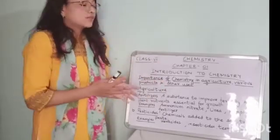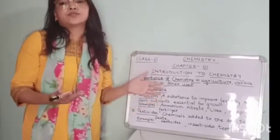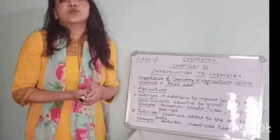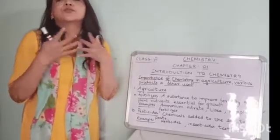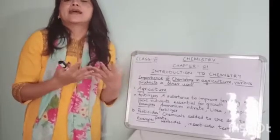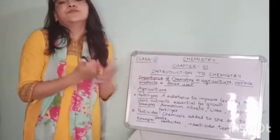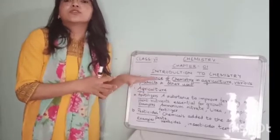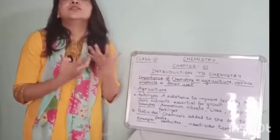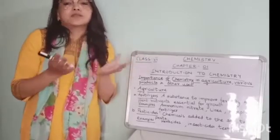Let's start with the first one, which is agriculture. Agriculture is the growing of crops — when farmers grow crops or plants in a larger area, it is called agriculture. In agriculture, chemistry is important because chemicals are used for the fertility and proper growth of plants.